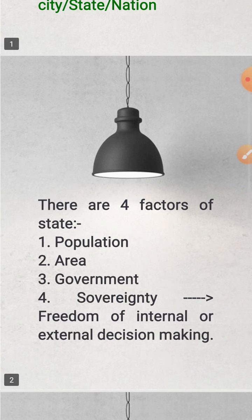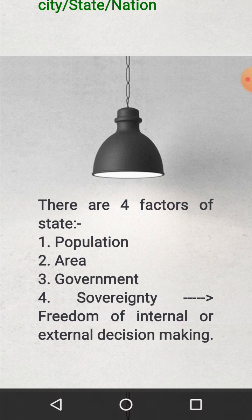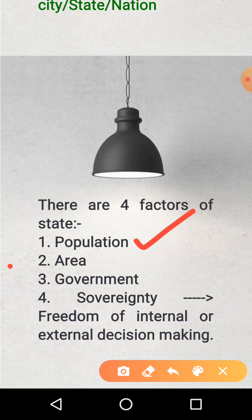If there is a city, state, or nation, then there are four factors of state. If there is a state, city, or nation, it means there will be a particular population there, a particular geographical area, then a particular system of government for the many people living there, and the fourth is sovereignty — sovereignty means freedom of internal and external decision making, means they can take their own decisions whether internal or external.